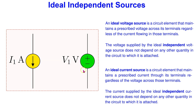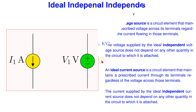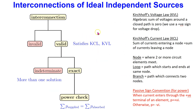Ideal independent sources can supply or absorb power depending upon the circuit conditions, and this is also perfectly fine. Since ideal independent sources are circuit theory constructs, interconnections of such sources is also a circuit theory construct. Such interconnections allow us to practice applying Kirchhoff's voltage law and Kirchhoff's current law with passive sign convention.